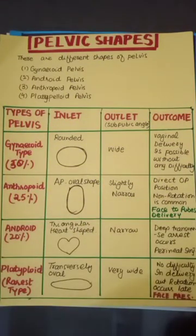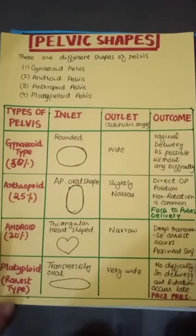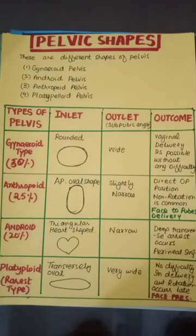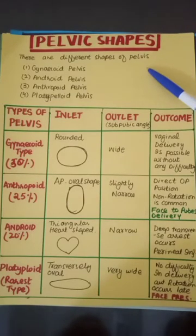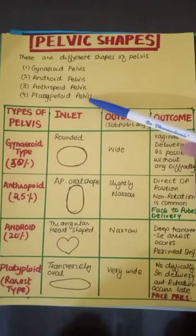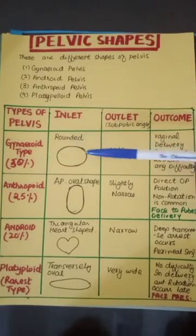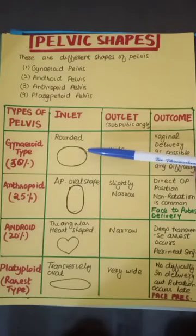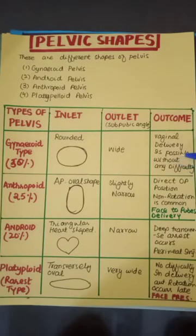A very important topic for both SAQs and MCQs is the various shapes of the pelvis, because the shape determines whether a patient can undergo normal vaginal delivery or will need a C-section. There are four shapes: gynecoid, android, anthropoid, and platypelloid. The gynecoid pelvis is the most common, with 50% incidence. Its inlet is rounded and it most easily favors normal vaginal delivery.